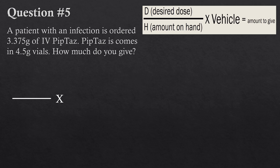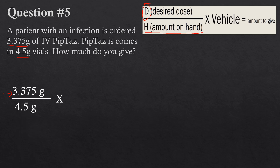Question five: a patient with an infection is ordered 3.375 grams of IV Piptaz. Piptaz comes in 4.5 gram vials — how much do you give? We solve it the exact same way. The desired dose is 3.375 grams on top. How much do we have on hand? We have 4.5 grams on hand in every vial, so 4.5 grams goes on the bottom. In this case Piptaz comes in powder form in a vial, so the vehicle is one vial.